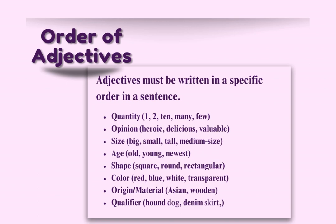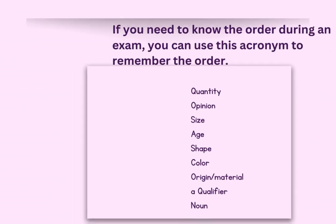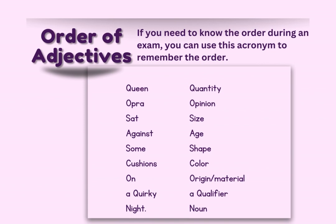The order of adjectives is important in English grammar. This is a list of the adjective categories in their proper order. Even if you do not use every category, you must follow the correct order. Pause the video and try to put some additional information into the chart to make some sentences. Many higher-level English exams check your understanding of adjectives by asking you to put adjectives in the correct order. For an exam, you can use this acronym to remember the order, which uses the first letter of each word to represent the first letter of the category placement, then puts the words into an easily remembered sentence.